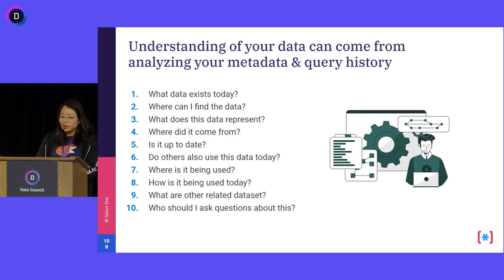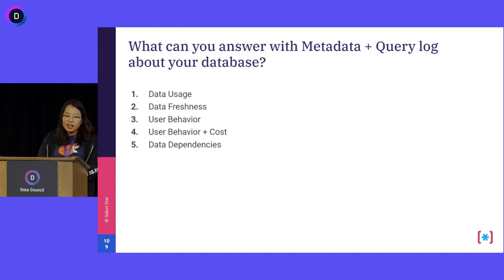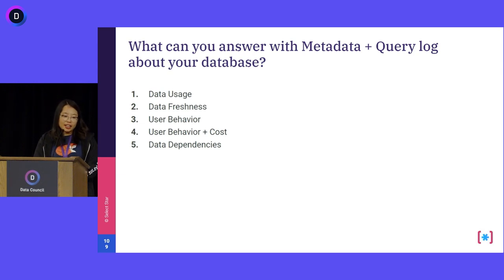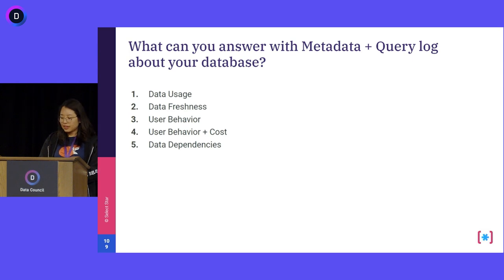That's what we do in a nutshell. Today I want to show you how it actually works underneath, so that if you are a data practitioner, you can also try finding out more about your own data warehouse yourself. I have five different examples: data usage, data freshness, data user behavior, cost analysis, and data dependencies. I'm going to use Snowflake as an example — each database is slightly different, but Snowflake serves as a good reference. Let's start with data usage.